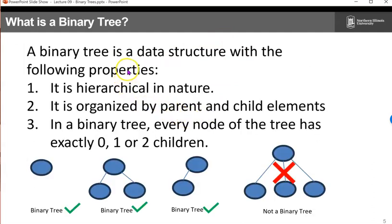So what is a binary tree? It's a data structure with the following properties. It's hierarchical in nature. It's organized by a parent and child elements. In a binary tree, every node of the tree has exactly 0, 1, or 2 elements.